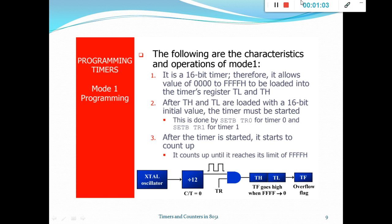Now we will see in detail the entire structure of mode 1 and mode 2 programming. Here you can see the block diagram of mode 1 programming. The units are: XTL oscillator, then divided by 12, then an AND gate, then TH and TL values, then TF.